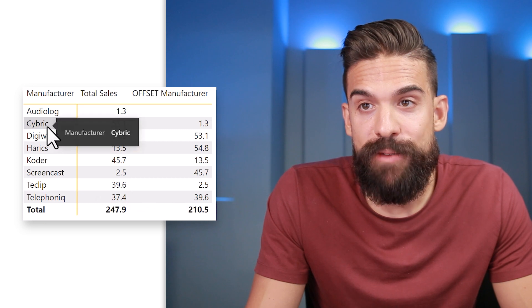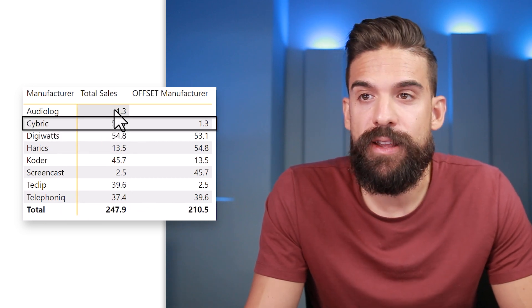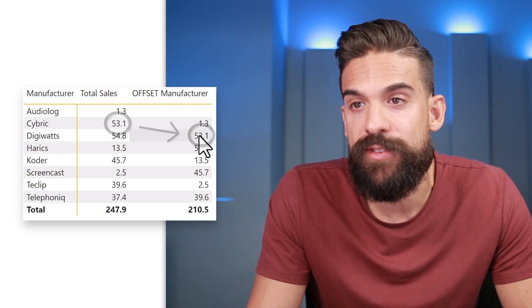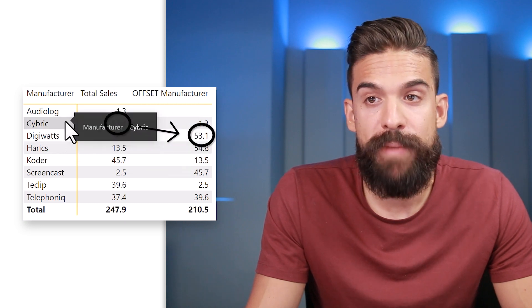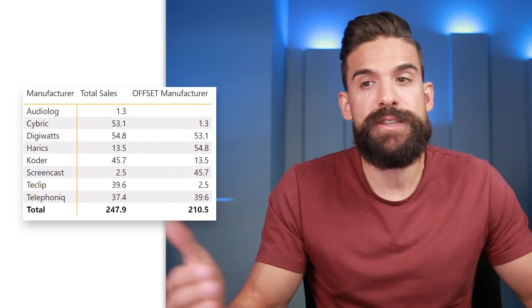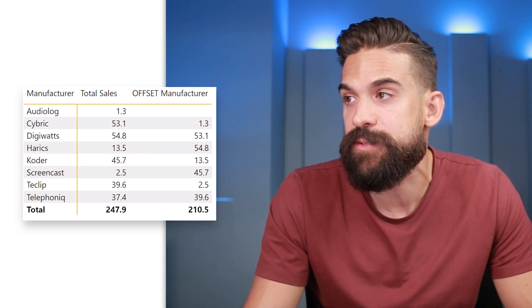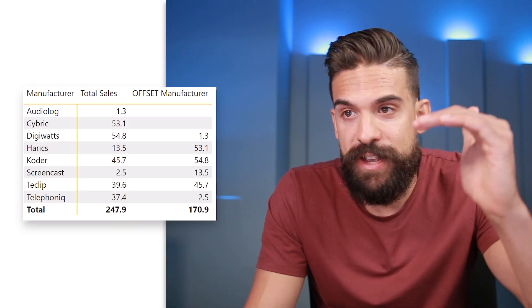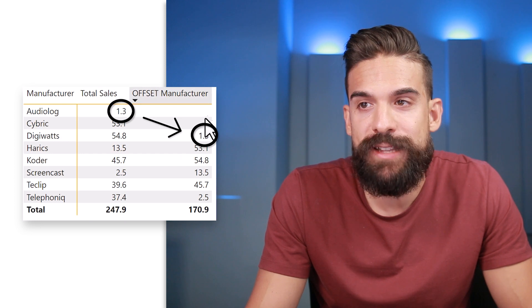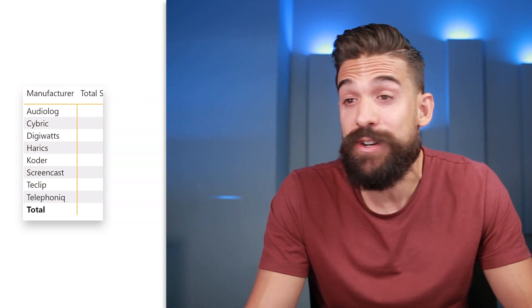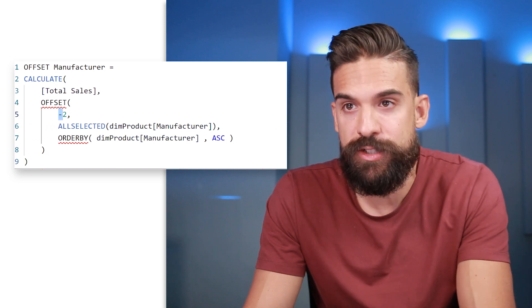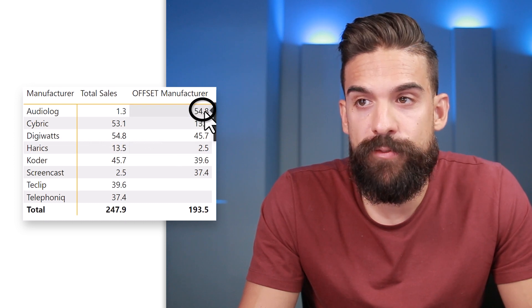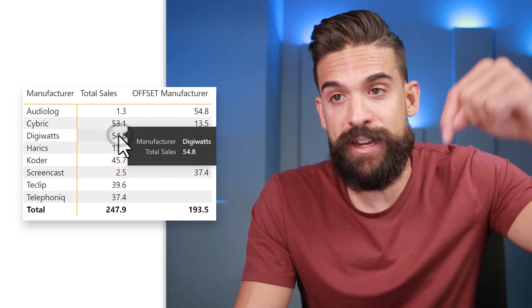We can see that for Cybrick, the second manufacturer, it returns the total sales of Audiolog — the row above it. For DigiWatt it returns the total sales from the manufacturer above it. We can shift that in different ways: changing to minus two shifts values by two rows, leaving blanks at the top. Going in the other direction with plus two shifts values the other way, so the first row shows 54.8, which is the value for DigiWatt two rows down.